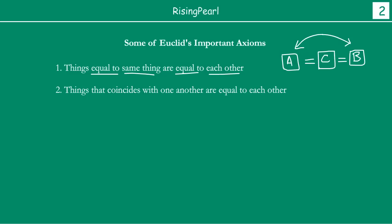Then he stated something like: things that coincide with one another are actually equal to each other. What he said was: suppose you take one thing like A, and there is another thing called B. If you take A and place it on top of B, and A completely coincides with B — meaning A exactly covers B — then that means both A and B are equal. So, things that coincide with one another are equal to each other.